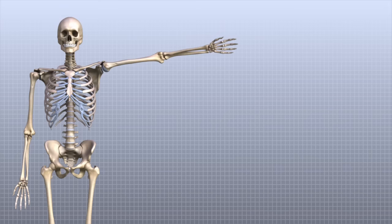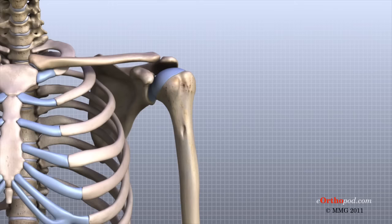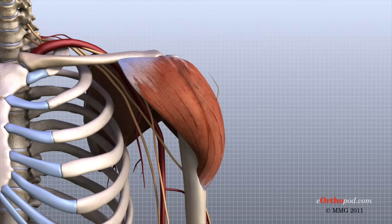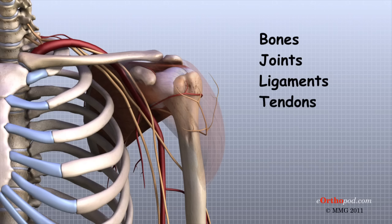The shoulder is an elegant piece of machinery. It has the greatest range of motion of any joint in the body. However, this large range of motion can also lead to shoulder joint problems. Understanding the different parts of the shoulder can help you understand how the shoulder works, how it can be injured, and how challenging recovery can be when the shoulder is injured. The important structures of the shoulder can be divided into several categories.